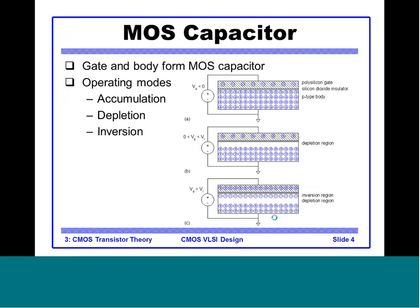A MOS capacitor works in three major modes: accumulation, depletion, and inversion. These three regions are defined by the voltage on the gate and the voltage on the drain. We will see each of these three regions in detail.